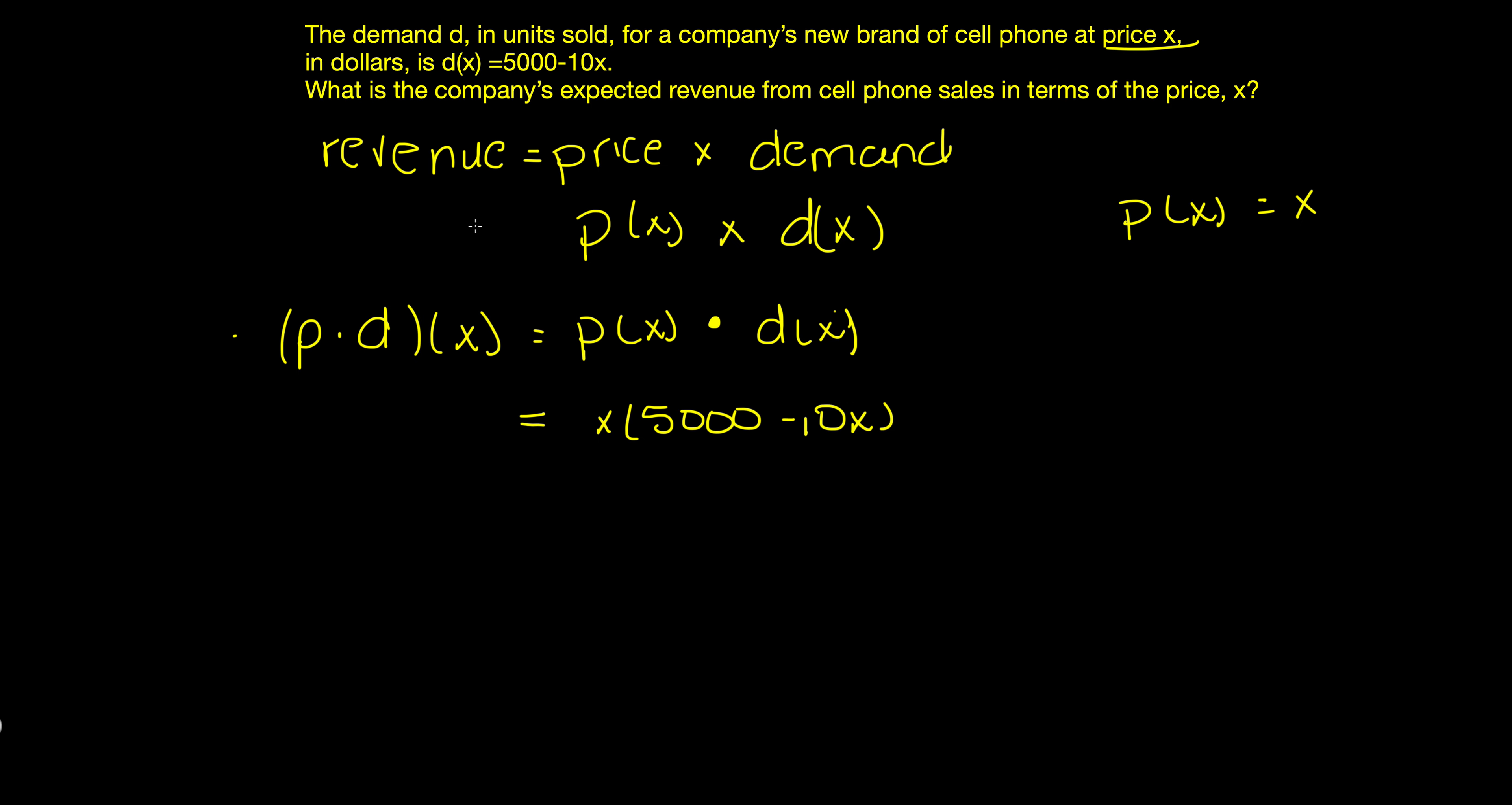Using the distributive property, we are going to see this as 5,000x minus 10x².